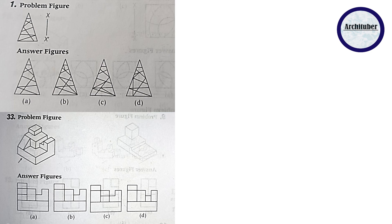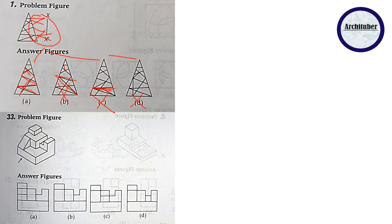For this figure, you simply have to make the exact same mirror image on the other side. You know how many lines there are, so try to match it with the answer figures. D is not similar to what we made. C is similar, but there is an extra horizontal line, so C is not the answer. In B, there is an extra triangle and extra lines, so B is also not the answer. A has this line, this cross, and the horizontal line matching exactly — so A is the answer.